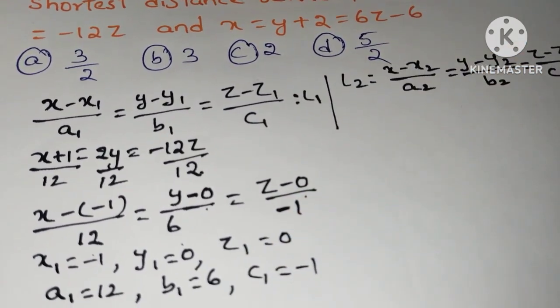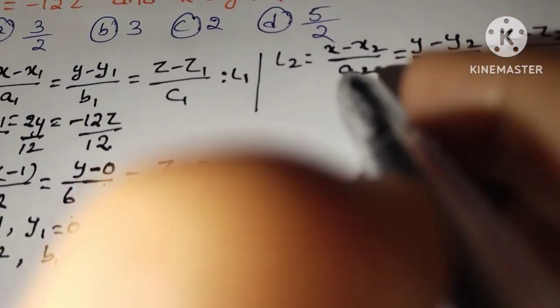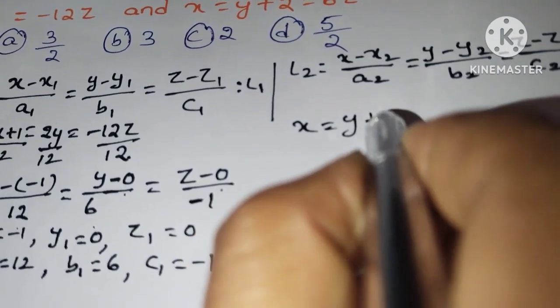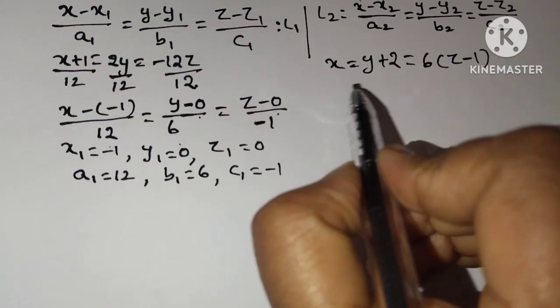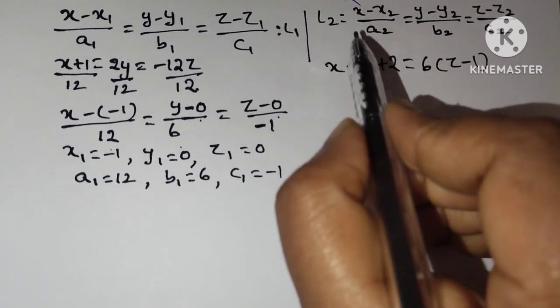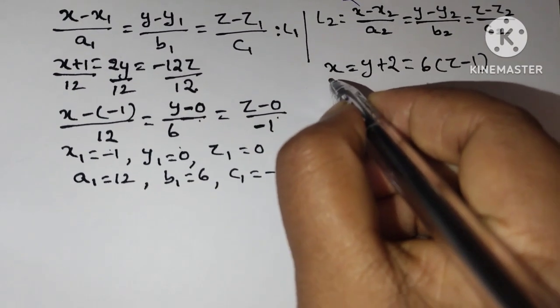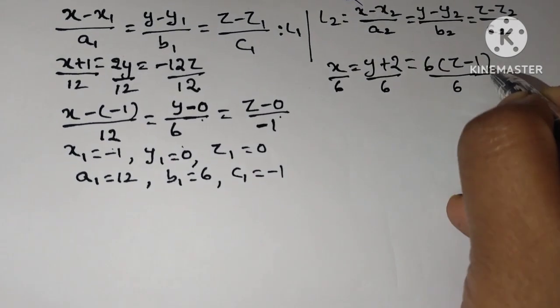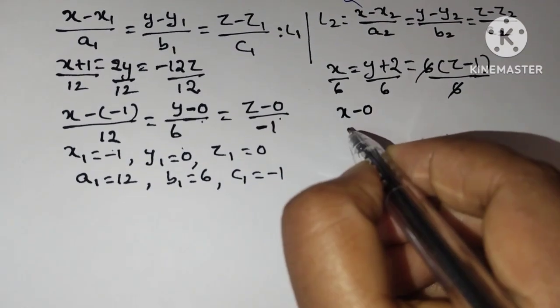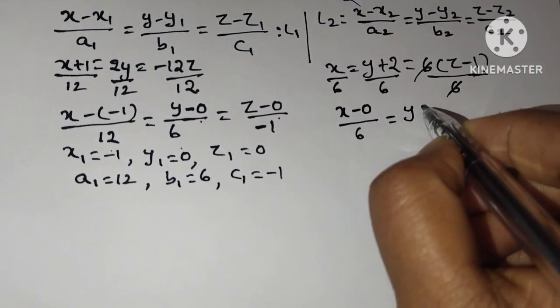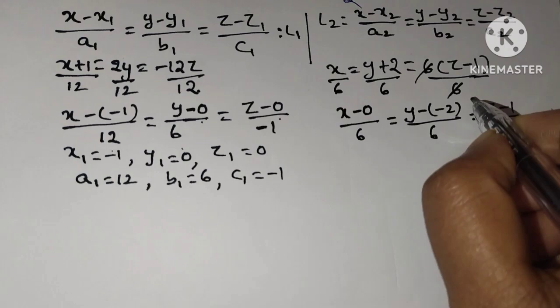Next, the second line. Now observe the second line. The second line is x equals y plus 2 equals 6z minus 6. Now again this line 2 also rearranged as Cartesian form. So here z coefficient is 6. Divide every term with 6. x, 6 cancel. The remaining is x. There is no number. Then I will write x minus 0 by 6. That equals y minus of minus 2. I will write plus as minus of minus. And that equals z minus 1 by 1.